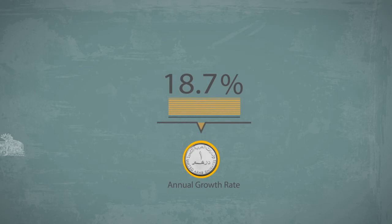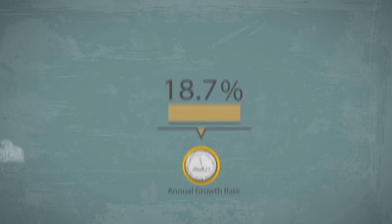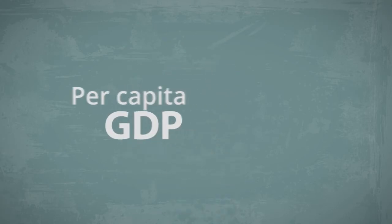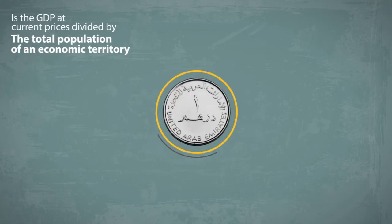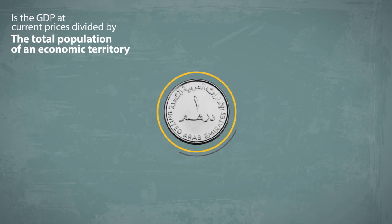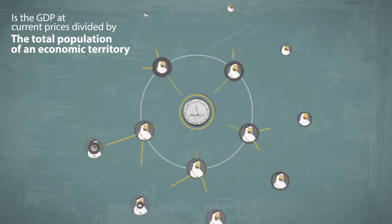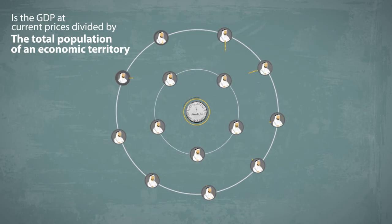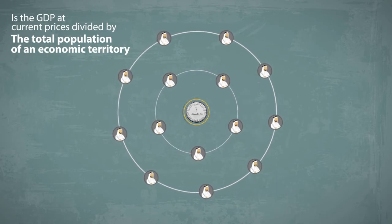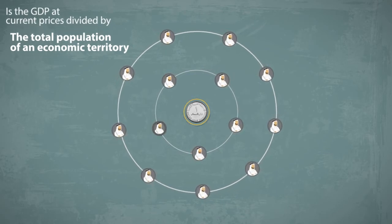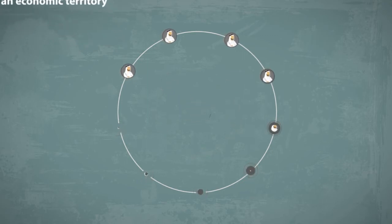This represents a remarkable average annual growth rate of 18.7% during this period. GDP per capita is the GDP at current prices divided by the total population of an economic territory. It is seen as an indicator of how much each person benefits from the average economy.